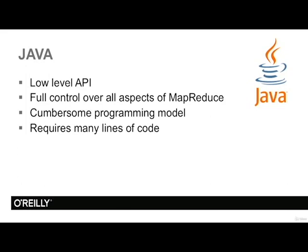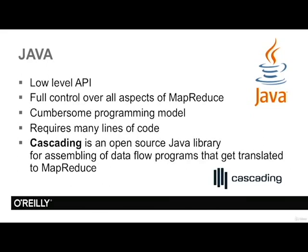But again, you have great control. If you still want to stay with Java but would like greater productivity, you should look into Cascading. Cascading is an open-source Java library where you program by assembling data flows, and these data flows get translated to MapReduce jobs. Cascading is a very good option that combines the full power of a programming language and also gives you higher productivity.